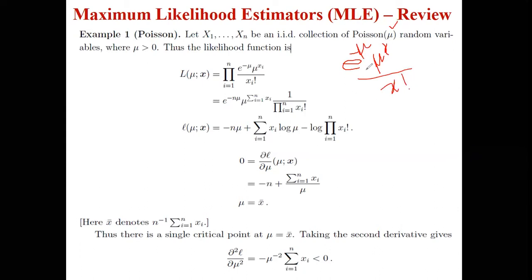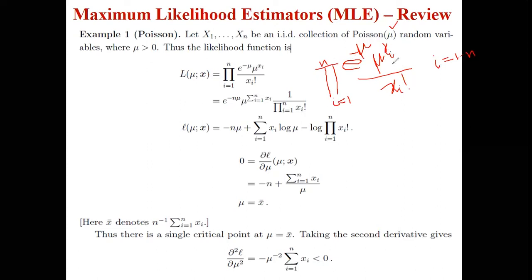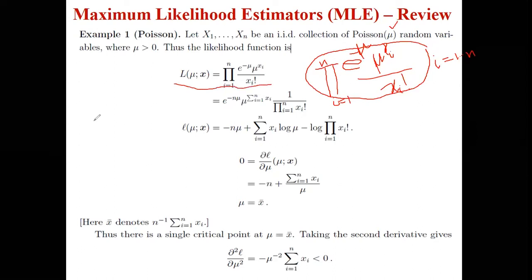This probability function becomes the likelihood function. So in the likelihood function, x's place is replaced by x_i, where i goes from 1 to n. That means we put x1 in first, then the second value, then up to the nth value, and multiply them all together. The resulting value is called the likelihood function.